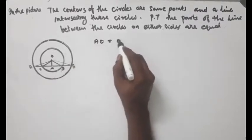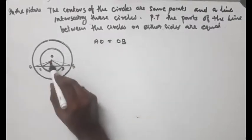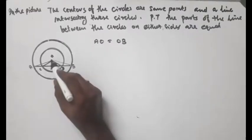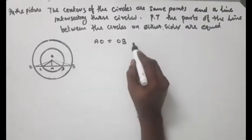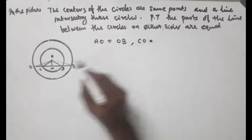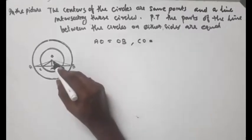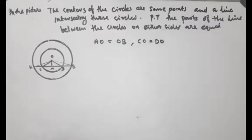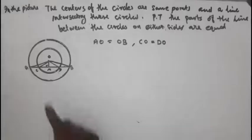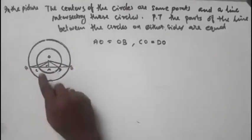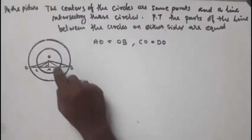What is the first chord? These two are the first chord. This chord is CON, this chord is DON, this chord is AOB, and this chord is COD.